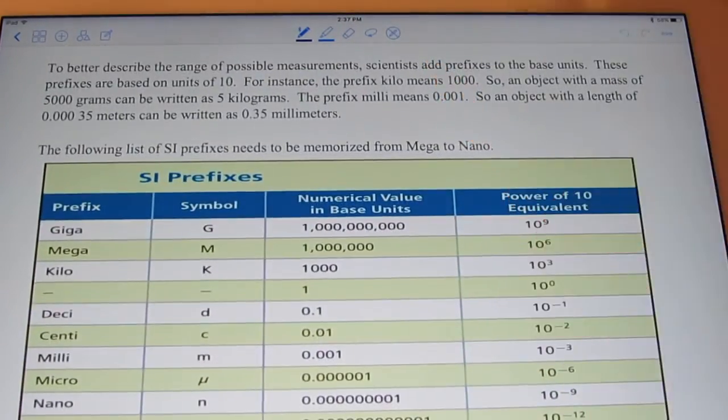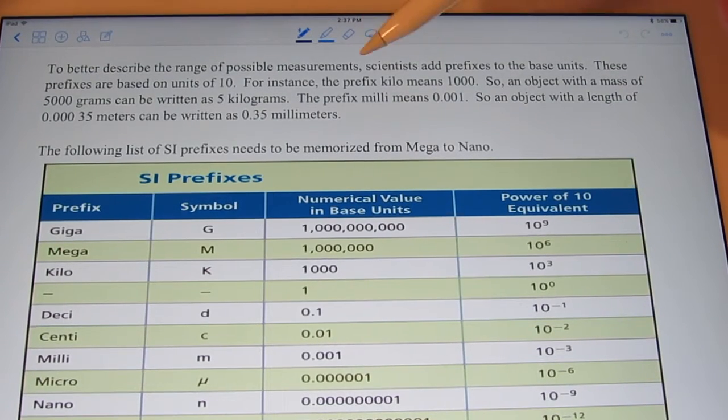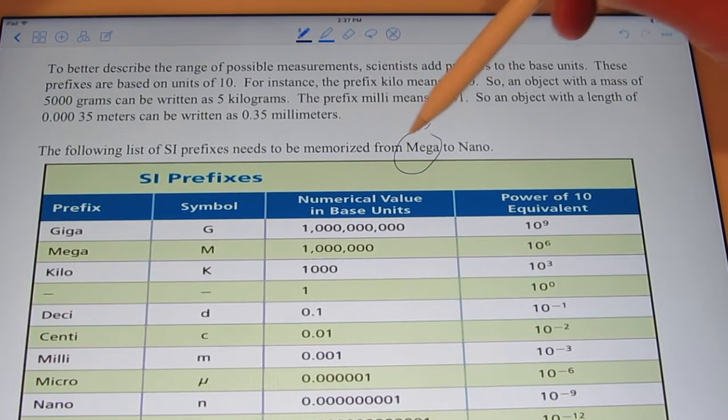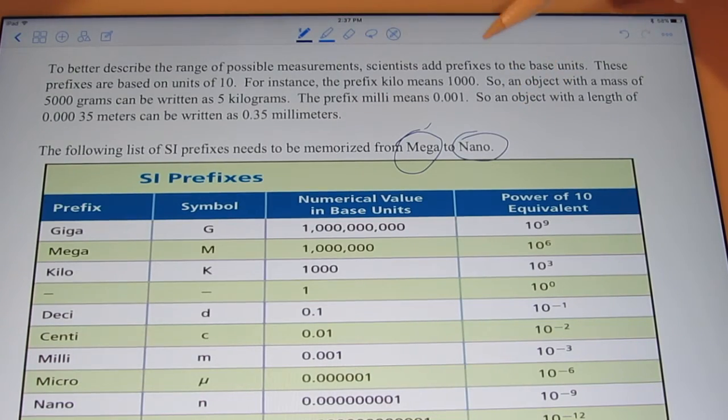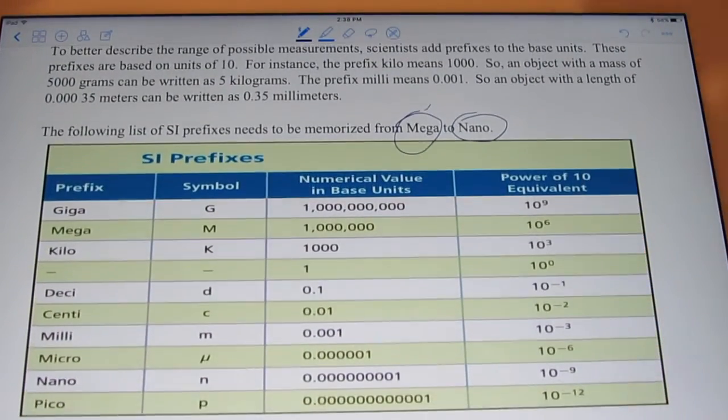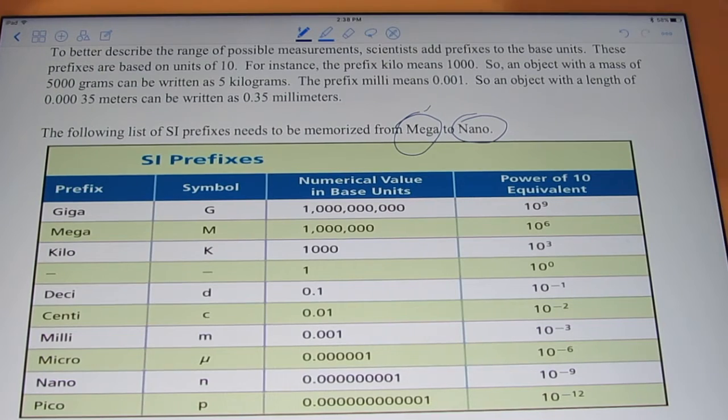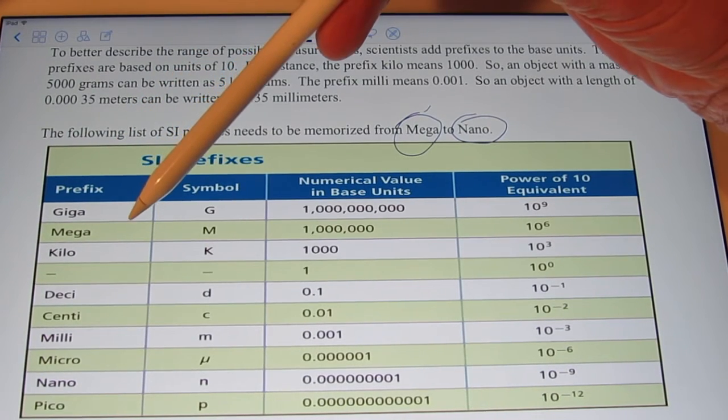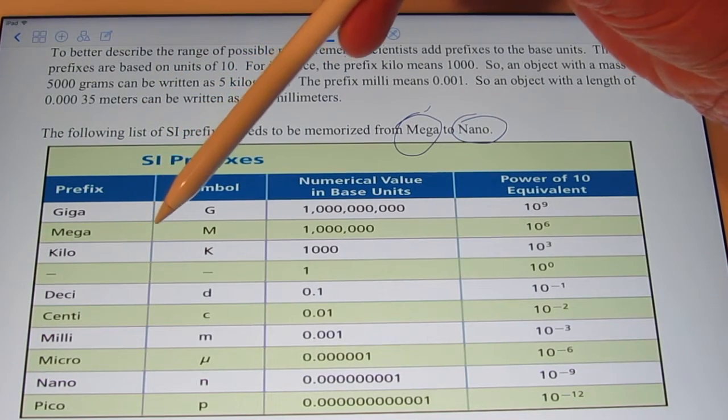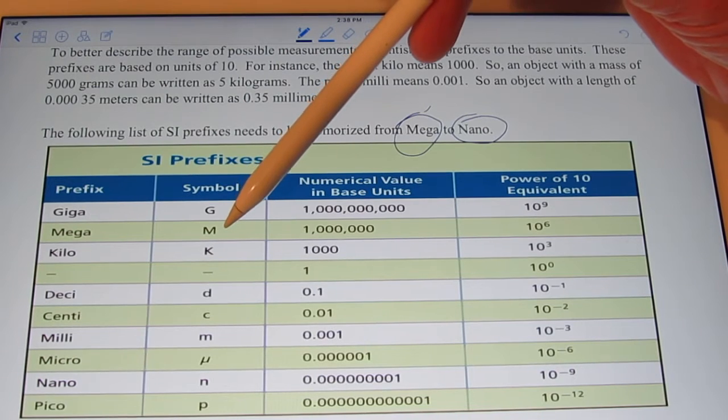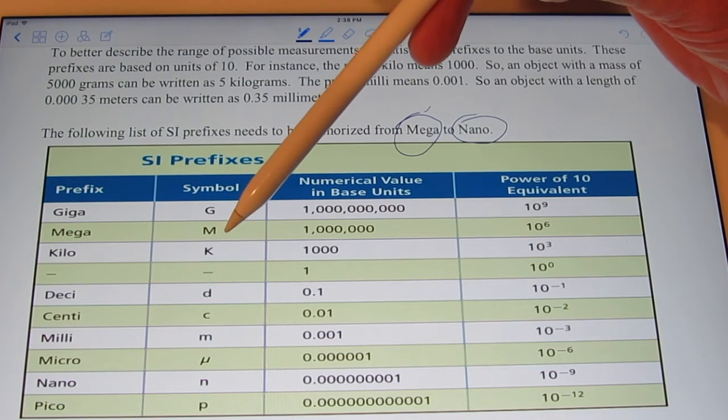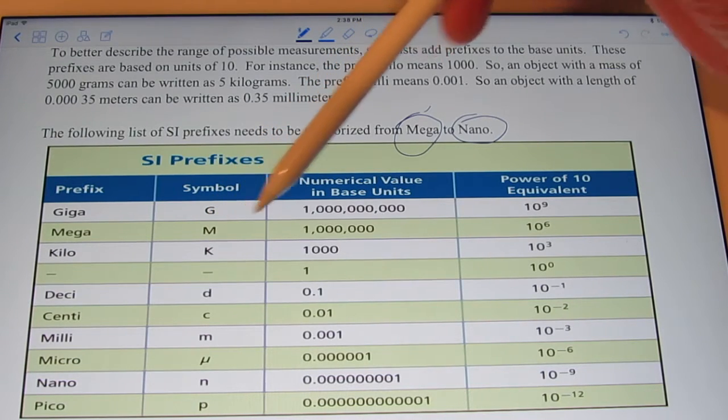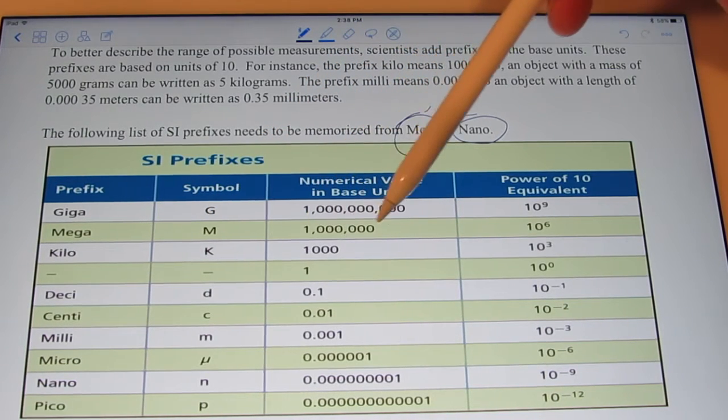Now, the following is a list of SI prefixes. This list, from mega to nano, needs to be memorized. You need to know what these prefixes mean. So if I were to use the prefix mega, for instance, mega-gram, I would symbolize it with a capital M and a small letter G, and that would mean a million grams.